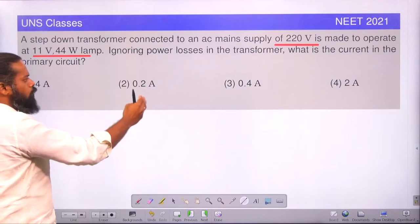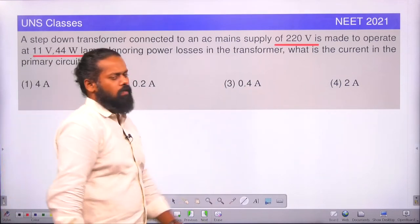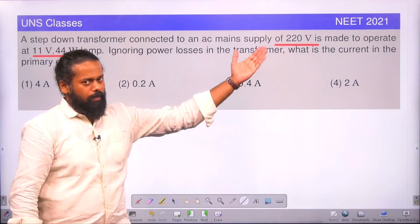Options are given: 4 amps, 0.2 amps, 0.4 amps, 2 amps. This is a question from 2021 NEET.